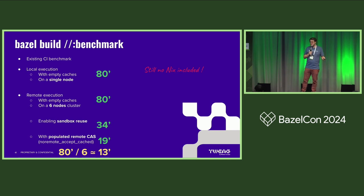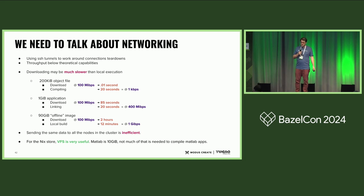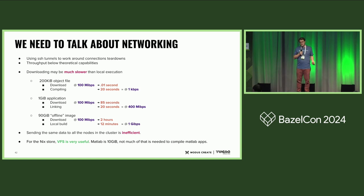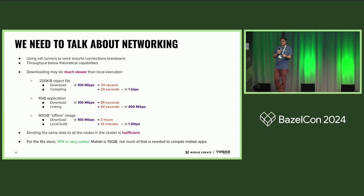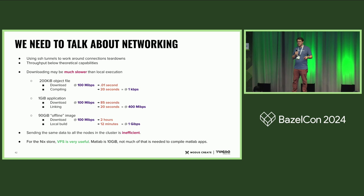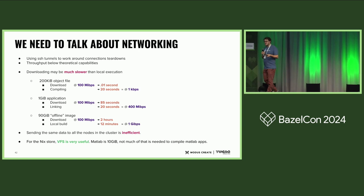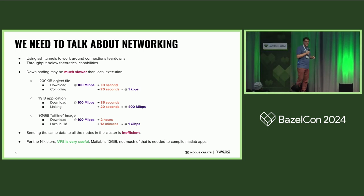Although, I should mention we didn't benchmark Nix at all in this — it's just basic remote execution like anyone else. I wanted to make a point about networking and very huge blobs that we shouldn't send over the network. We have this 90-gig image — that's why it takes 12 minutes to assemble locally. But if you download it on a 100-megabit network, it takes two hours. So it's clearly better to assemble it locally. If you think about it, building it locally is equivalent to having a one-gigabit network — ten times faster.